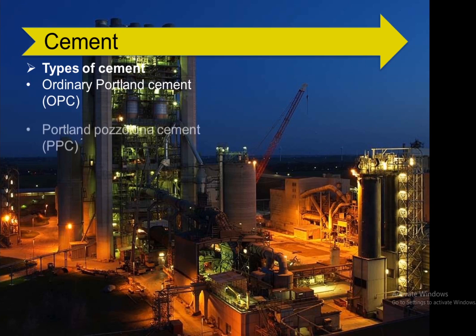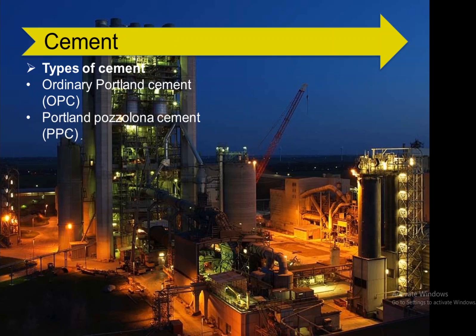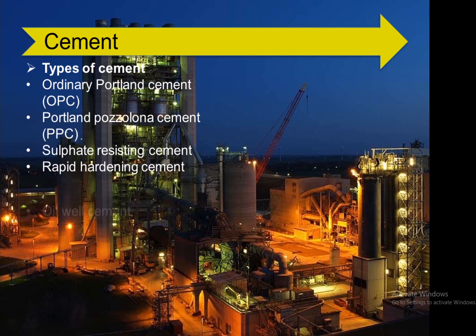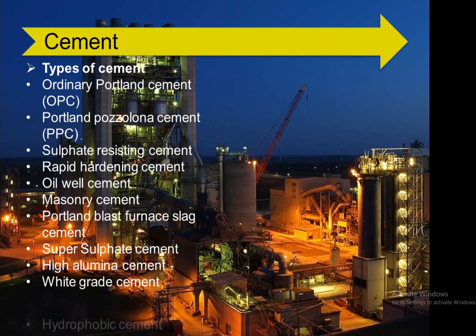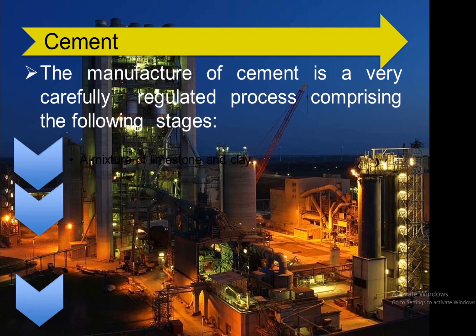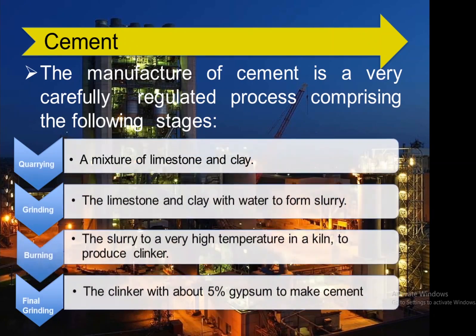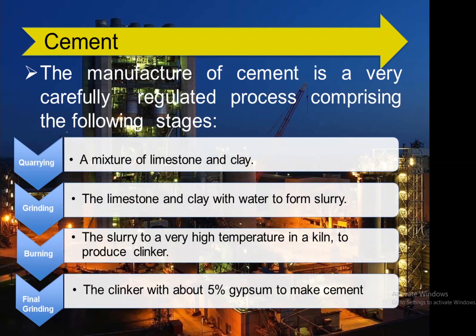The two major types of cement are Ordinary Portland Cement and Portland Pozzolana Cement. Other types include sulfate resisting cement, rapid hardening cement, oil well cement, machinery cement, Portland blast furnace slag cement, super sulfate cement, high aluminum cement, white grade cement, and hydrophobic cement.